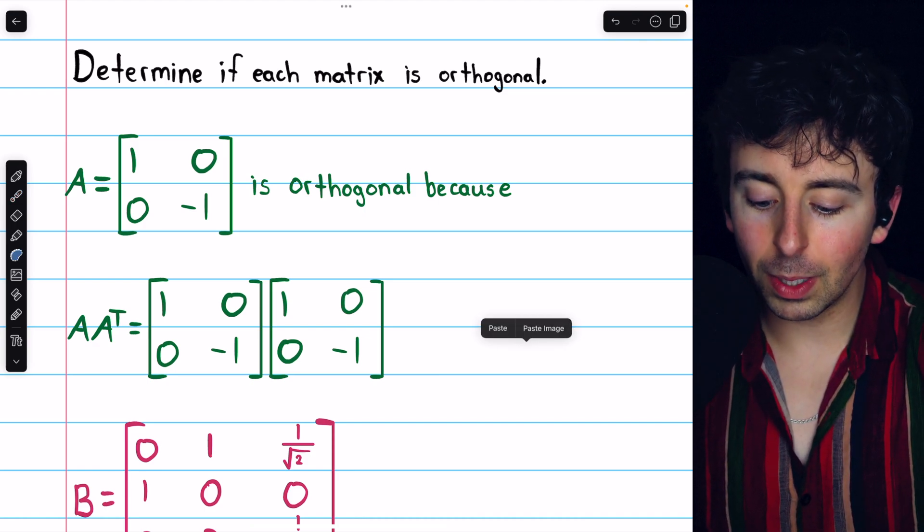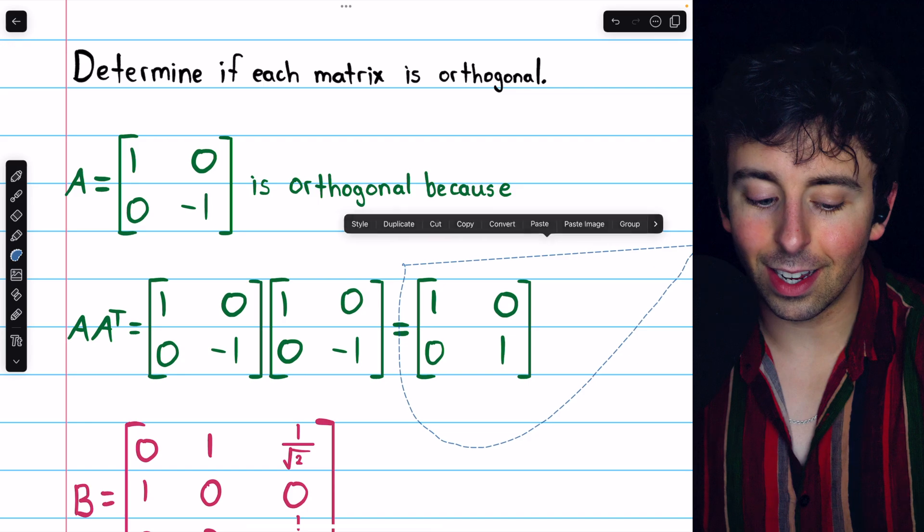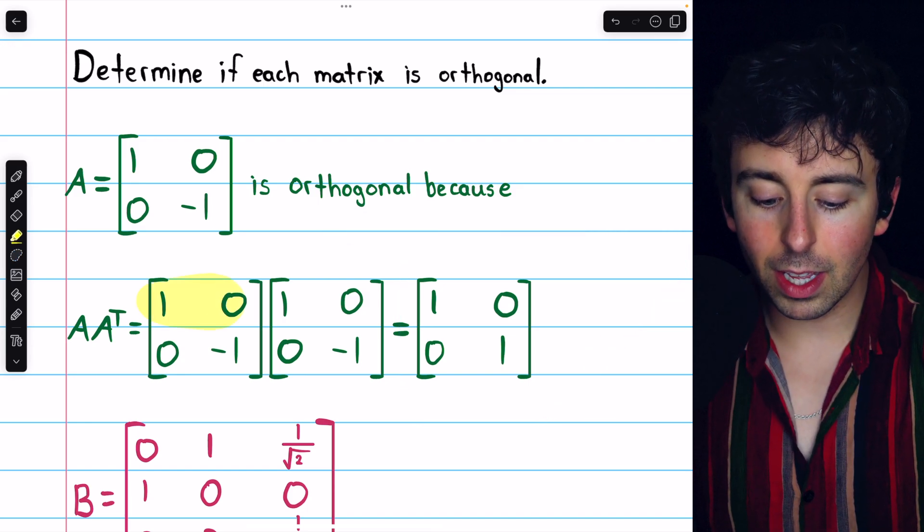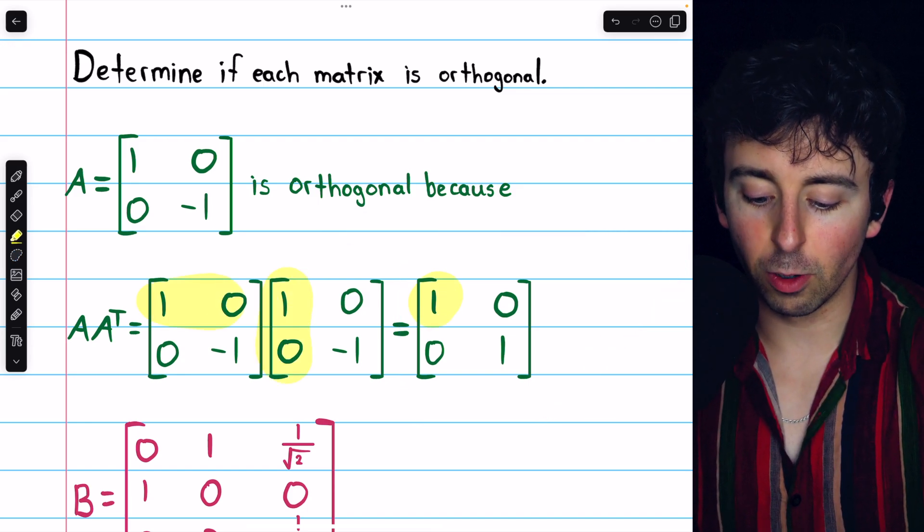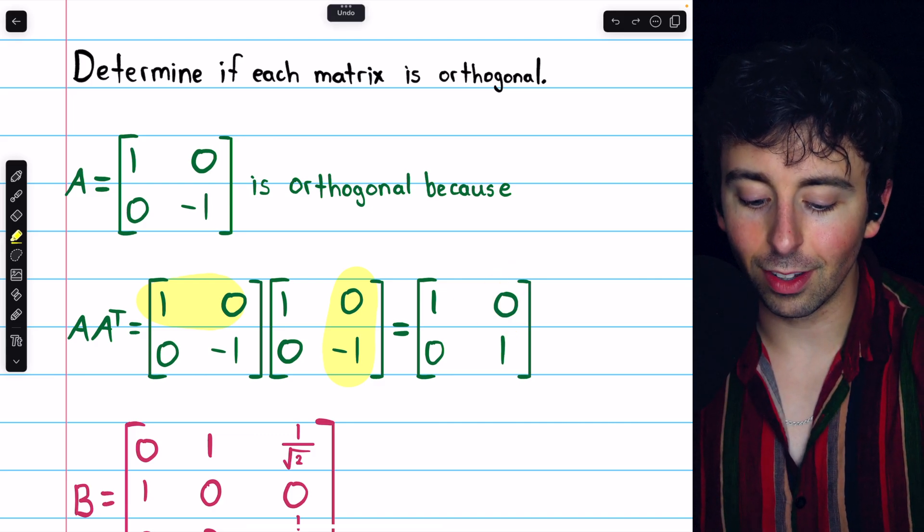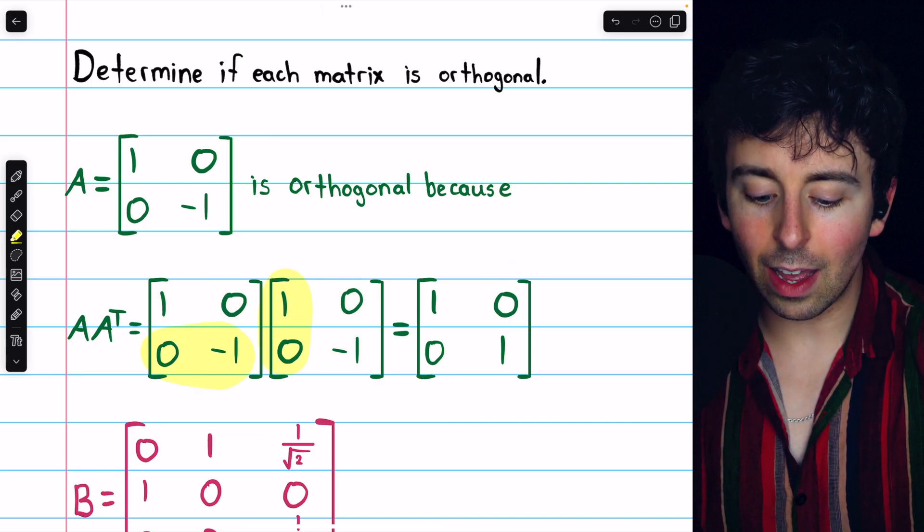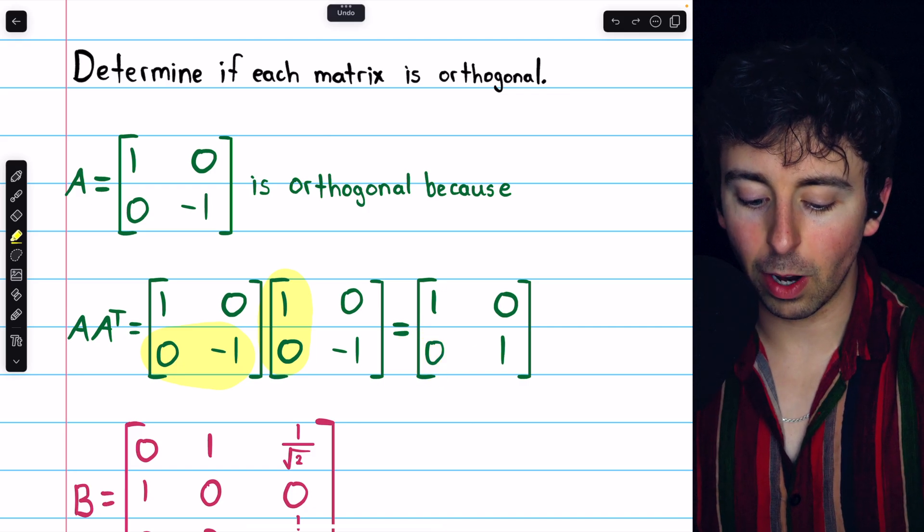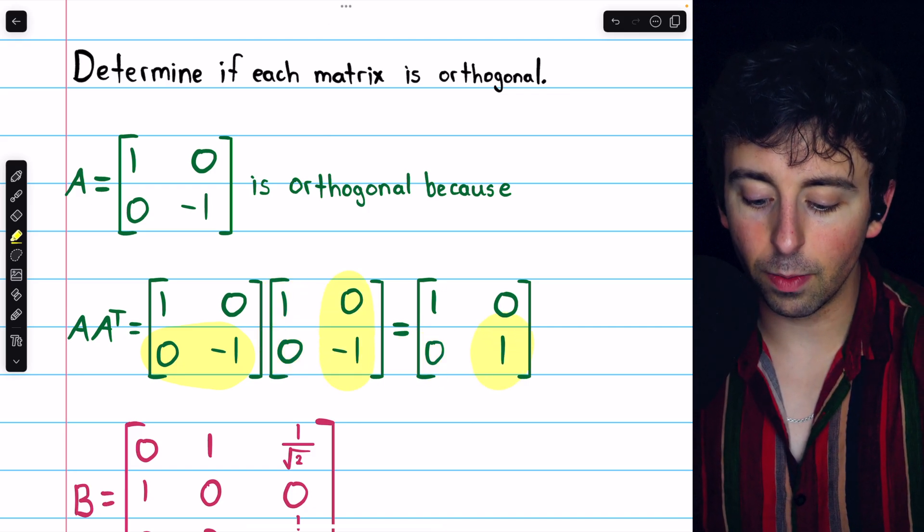Then doing the matrix multiplication, we find that this product does equal the identity, because we would have 1 plus 0, which is 1, and then we would have 0 plus 0, which is 0, and then we would have 0 plus 0, which is 0, and then finally 0 plus 1, which is 1.